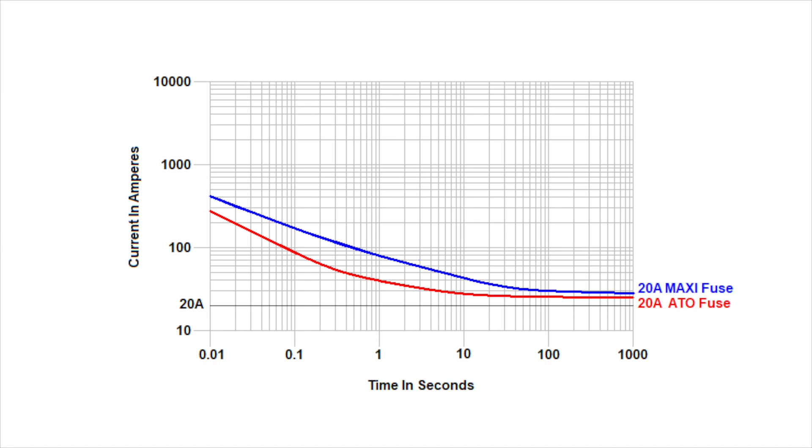When we compare the TC chart for a slow blow fuse with a standard fuse, we see that the performance curve in the 10 second and greater range is fairly close. But in the area between 100 milliseconds and 10 seconds, the slow blow fuse allows more amperage.